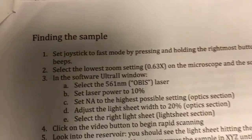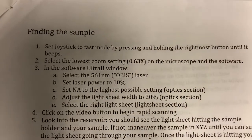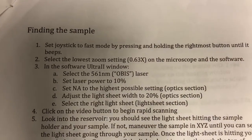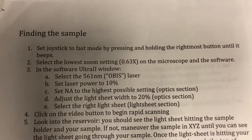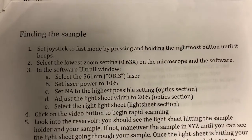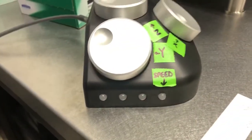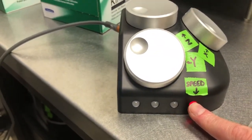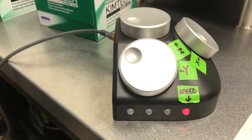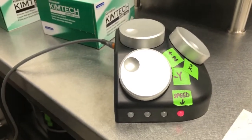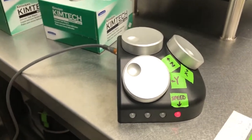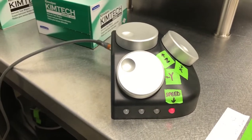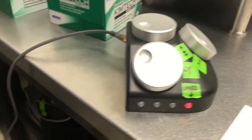Step one is to set the joystick to fast mode by pressing and holding the rightmost button until it beeps. I've already shown you how to do that, but let me do it again. I'm going to press and hold this — now it's blinking quickly. The reason we do that is we want to be able to move quickly when we're at the very beginning of the setup procedure.